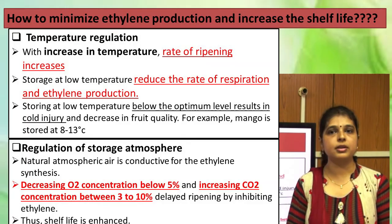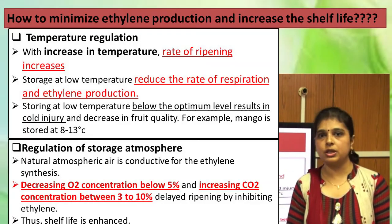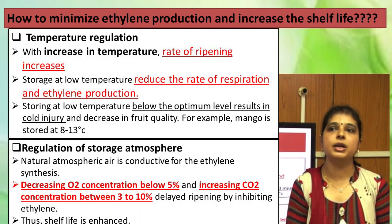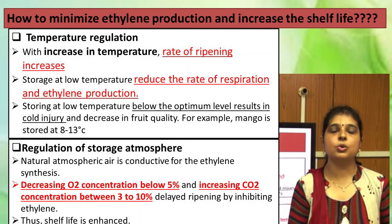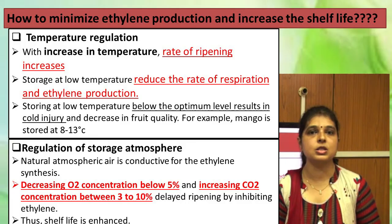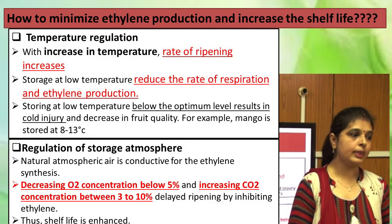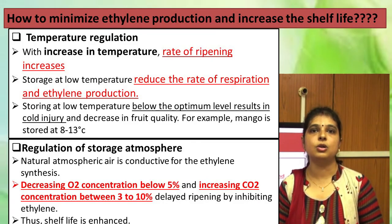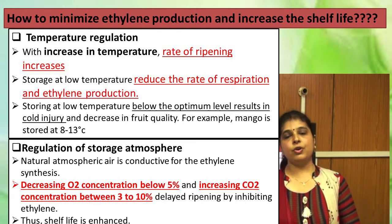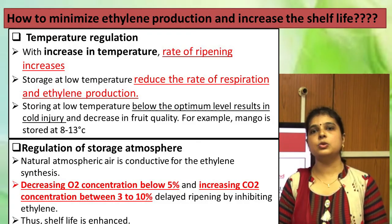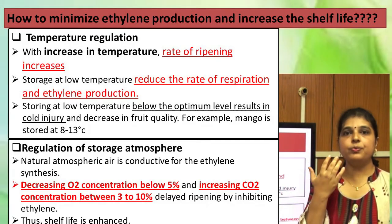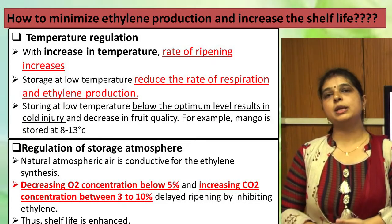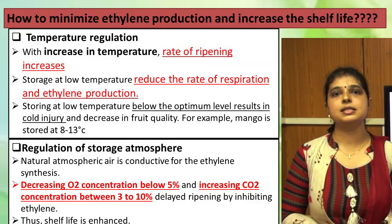Use of artificial ethylene improves shelf life and quality of fruits. The use of ethylene gas is now a multi-billion dollar industry in foreign countries like the USA and Japan, where it is being used beneficially for ripening fruits.